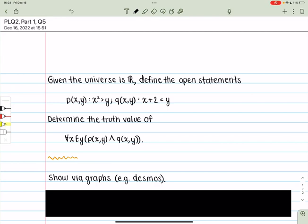The question reads, given the universe is the real numbers, define the open statements that P(x,y) is defined as x² greater than y and Q(x,y) is defined as x plus 2 is less than y.